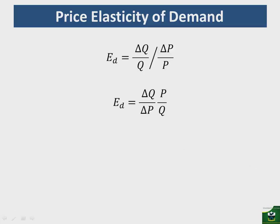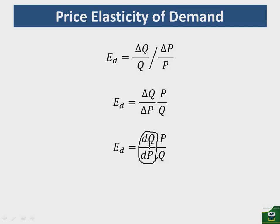We may also want to find the elasticity on a given demand function, in which case we need to get the derivative. So the formula becomes dQ/dP multiplied by P over Q. Here, dQ/dP is the rate of change of quantity demanded with respect to price — this measures the slope of the demand function. For a conventional downward-sloping demand function, this slope will be negative. We then multiply it by the price and quantity at the given point, which is why we call it the point elasticity of demand.